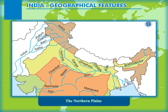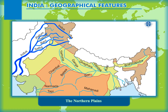The three main rivers that have played a vital role in the formation of the plains are: River Indus and its tributaries — namely Jhelum, Chenab, Beas, Ravi and Satluj — which flow in a westward direction and finally join the Arabian Sea.